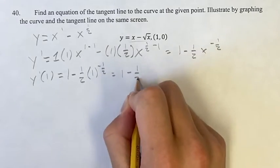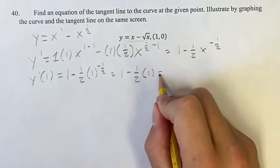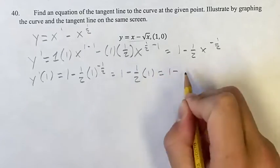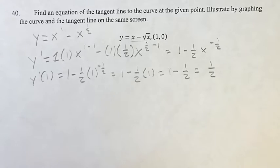This is 1 minus 1 half times 1 to any power is just 1. So 1 minus 1 half times 1 is 1 half equals 1 half. So this is the slope of the tangent line at this point.